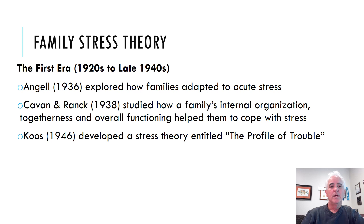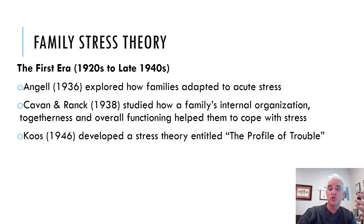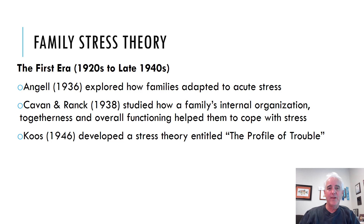The first era ran from the late 1920s to the late 1940s. In 1936, Angel explored how families respond to and adapt to acute stress. In 1938, Kavan and Rank studied how a family's internal organization — their togetherness and overall functioning — helped them cope with stressful situations. In 1946, Coos developed a model called the 'Profile of Trouble,' which we will turn to in chapter 3 of the text.